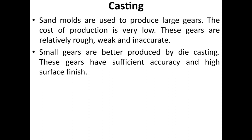Casting: sand molds are used to produce large gears. The cost of production is very low, but these gears are relatively rough, weak, and inaccurate. Small gears are better produced by die casting — these gears have sufficient accuracy and high surface finish.